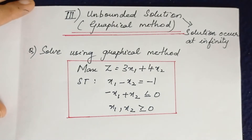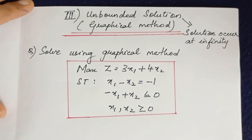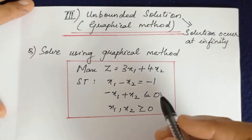Hi all, welcome back. Today we will be seeing the unbounded solution. This is one type of solution that we will get when we solve a linear programming problem (LPP). We will solve this by using the graphical method.